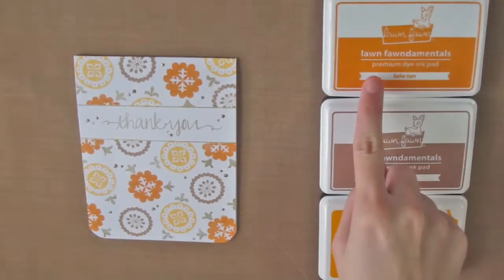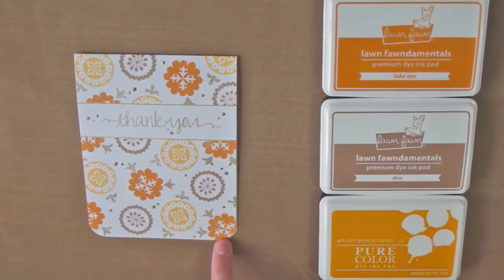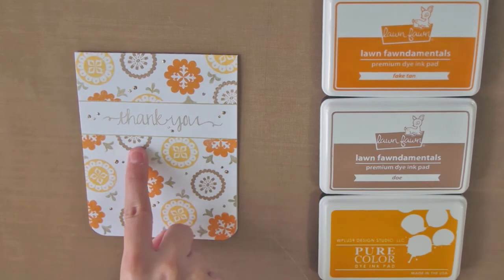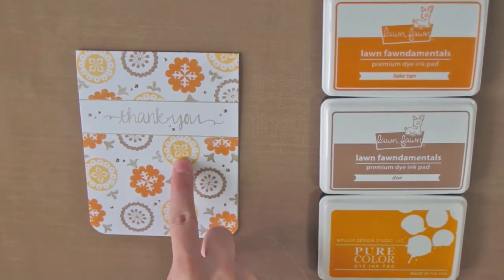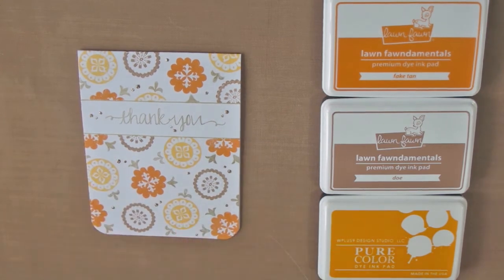So in short, I used the Lawn Fawn ink pads in fake tan and doe and the pure color ink pad in wild mango. I liked it and enjoyed it so much that I made two other cards while my battery was charging.